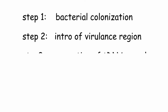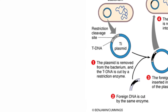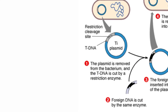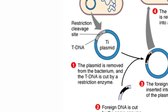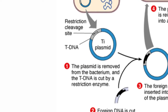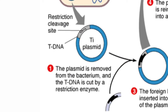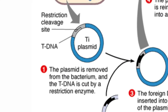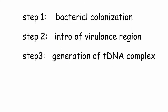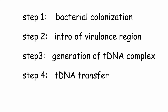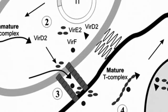Step 3 - Generation of the T-DNA complex: VirD1 and VirD2 of the virulence region play a role in the generation of the T-DNA complex. These two proteins cut the border sequence, and VirD2 attaches covalently to the 5' prime end of the T-DNA, which protects it from endonuclease attack.